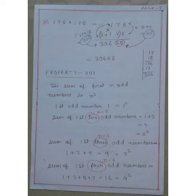Property 8. The sum of first n odd numbers is n². First odd number is 1, that is 1². Sum of first 2 odd numbers, here n = 2. So first 2 odd numbers are 1 and 3. 1+3 is 4, which is 2².